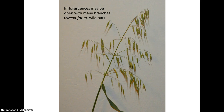Grasses are wind-pollinated, and so their flowers are very reduced, meaning they will have very different structure from what we've been used to looking at in insect- or animal-pollinated flowers. The inflorescences, or groupings of flowers, are quite varied in the grass family. Sometimes they will be very open and have many branches, as in the wild oat here.